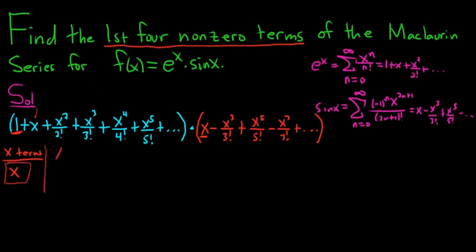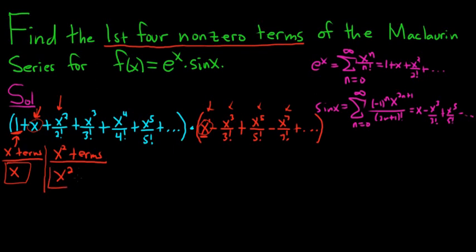Now let's look at x squared terms. Can we get an x squared term with the 1? No, we can only get odd powers of x — x to the 1, x cubed — because multiplying 1 by any sine term won't give x squared. Can we get an x squared term using the x from e to the x? Yes — x times x gives us x squared. There are no other x squared terms we can get. So the x squared term is just x squared.